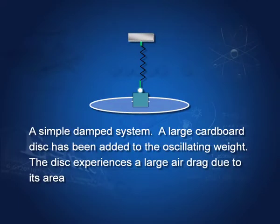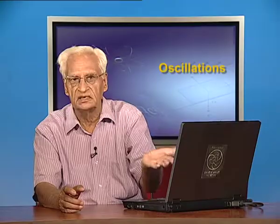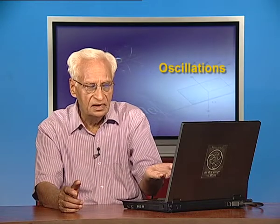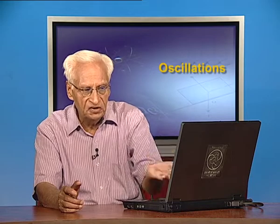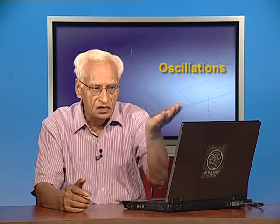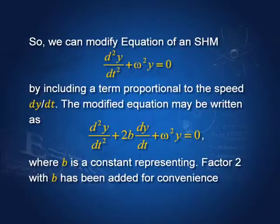Here is an oscillating weight. We have a spring and a weight. It oscillates. If this disc is removed, it will oscillate with natural frequency, which you know is the square root of k by m. When I attach a very large disc to it, then the friction due to air becomes considerable. Therefore, it affects the amplitude of these oscillations.